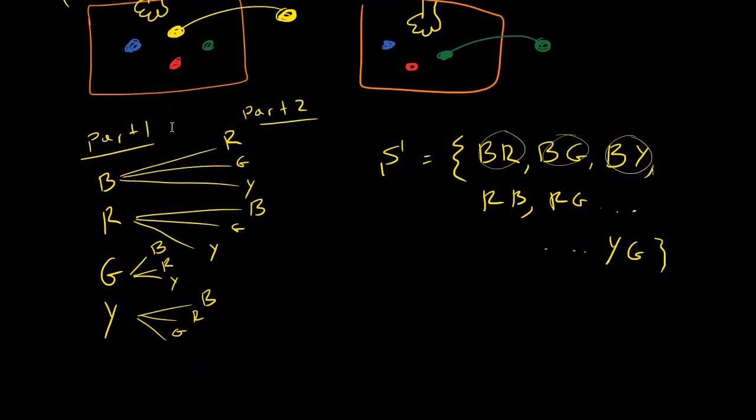Well, using the multiplication rule and using this tree diagram, I can see there are one, two, three, four options in part one, and in part two there are three options. So that leads me to 12. There are 12 total possible events in the sample space.